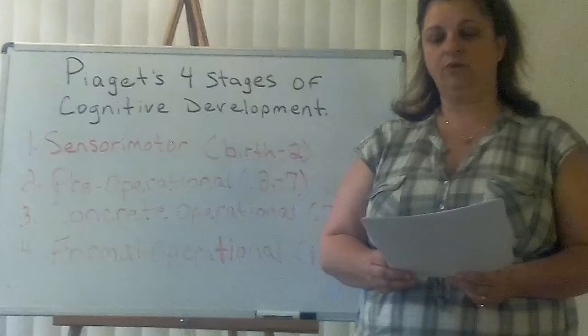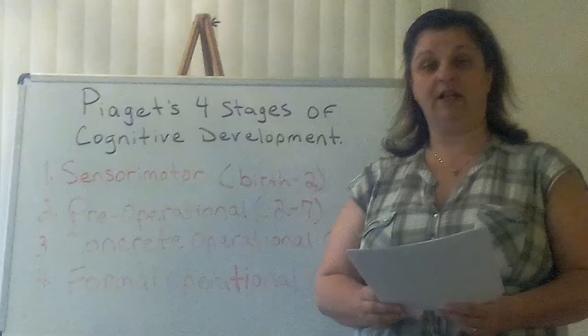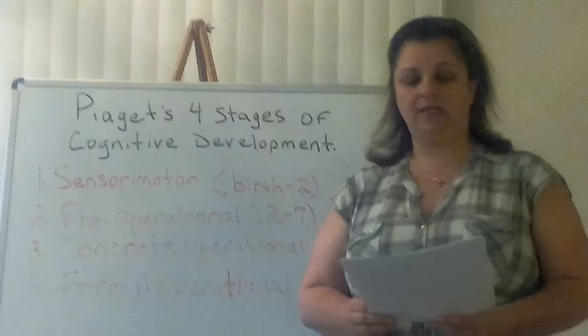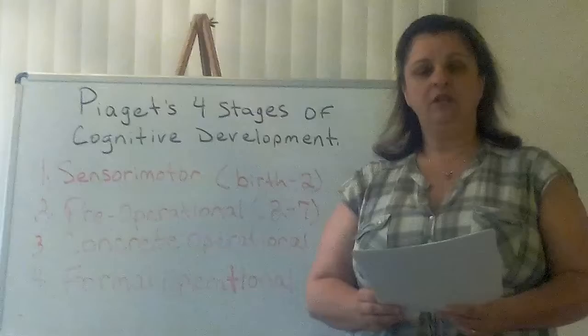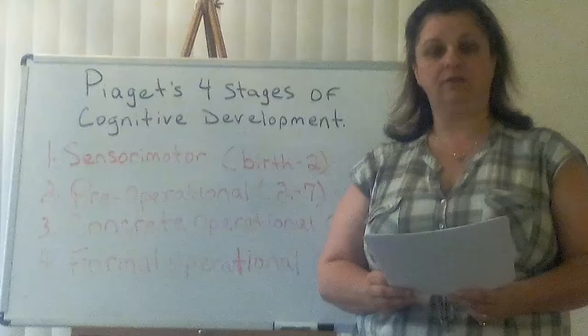It proposes discrete stages of development marked by qualitative differences, rather than a gradual increase in number and complexity of behaviors, concepts, ideas, and so on. The goal of the theory is to explain the mechanisms and processes by which the infant and then the child develops into an individual who can reason and think using hypotheses.